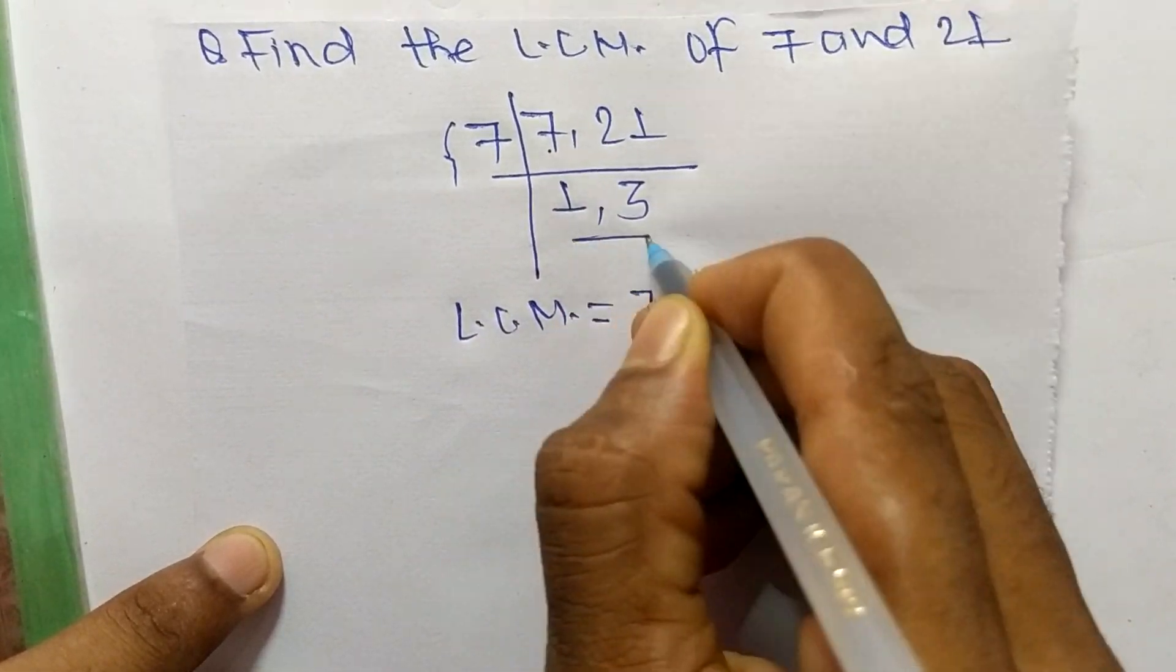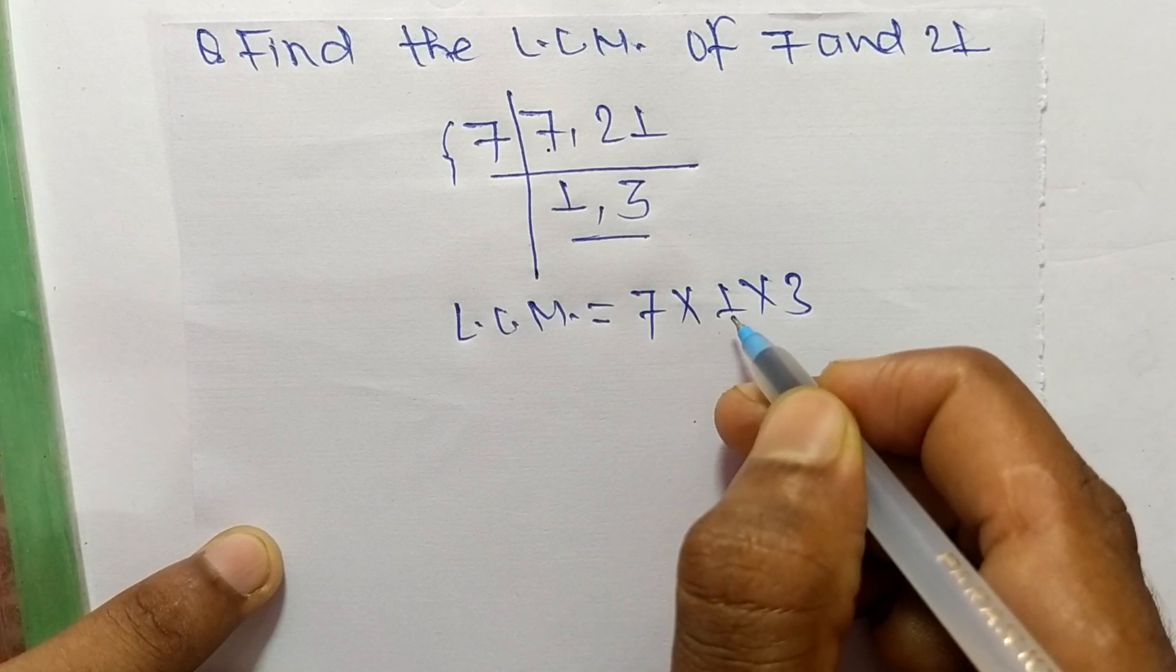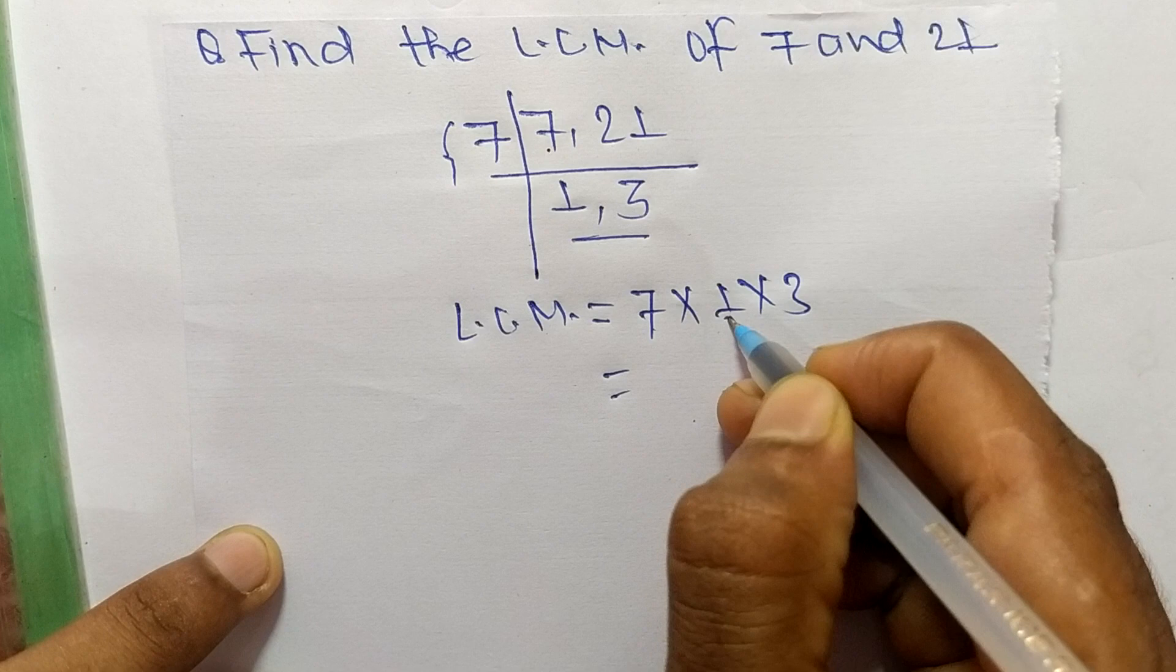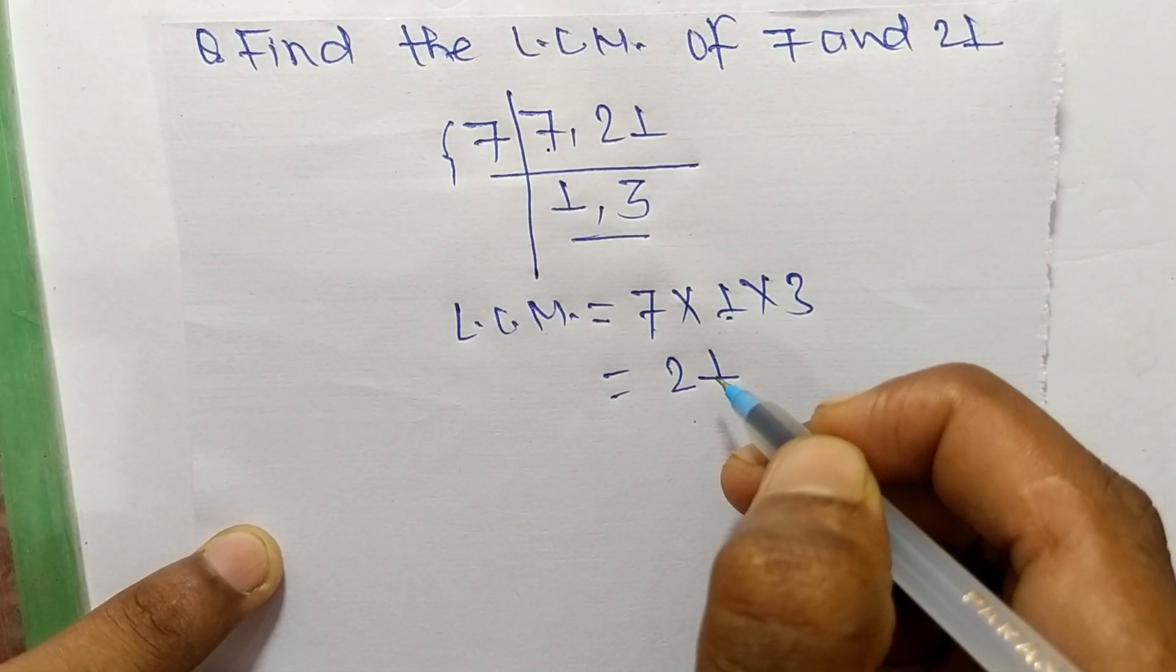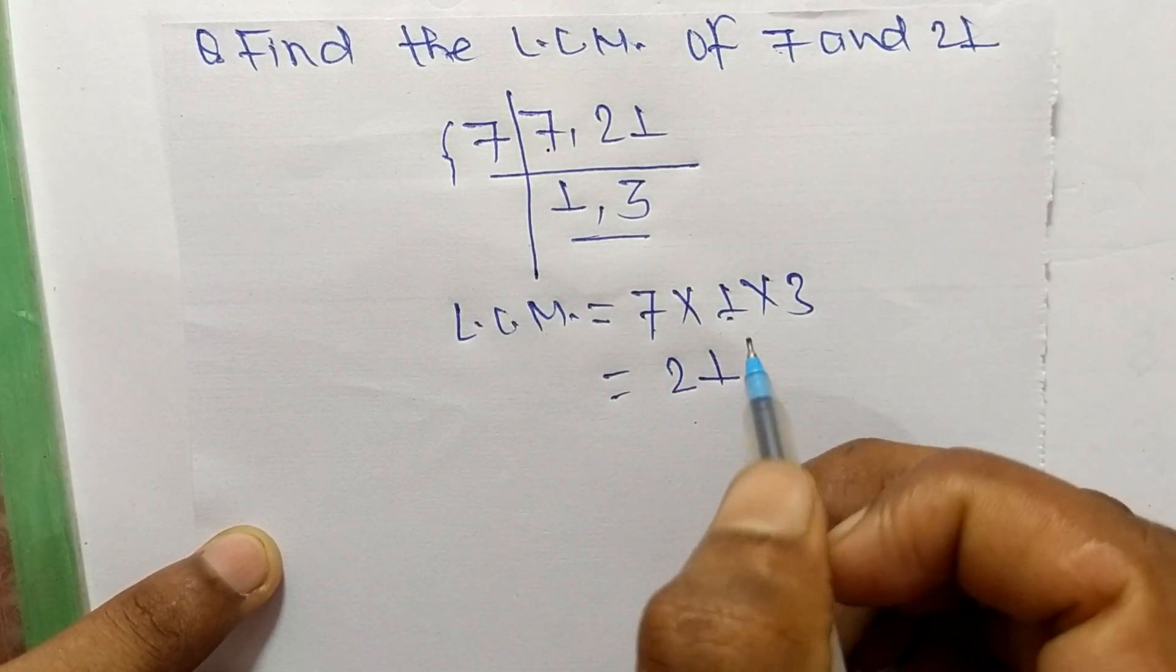7, and from this part it is 1 times 3. We can neglect 1 also, so 7 times 1 means 7, and 7 times 3 means it is 21. So 21 is the LCM of 7 and 21.